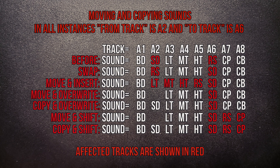Swap will swap the two tracks. Move and Insert will move a track and shift all other tracks up or down to accommodate it depending upon where its original position was. Move and Overwrite will replace the destination track with the source. Copy and Overwrite works the same but the source track is duplicated rather than moved. Move and Shift works a little differently — if the From track is less than the To track, tracks will be shifted up; if the From track is greater than the To track, sounds will be shifted down. Tracks can shift to the next bank in either direction, but if you push either track A1 down or track D8 up they will effectively be bumped off the end and lost, so be sure of what you're trying to do. Copy and Shift works like Move and Shift but the source track is duplicated and shifted to the new position.